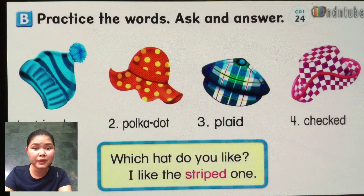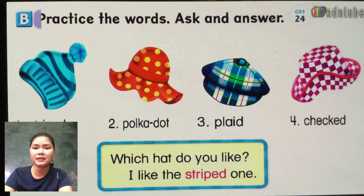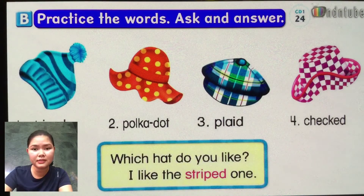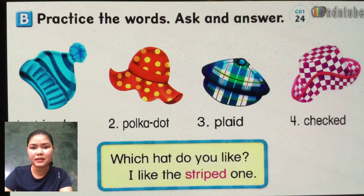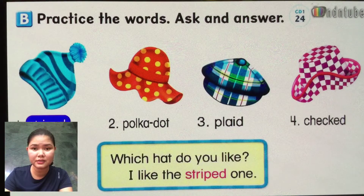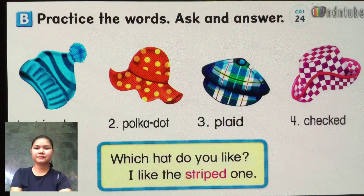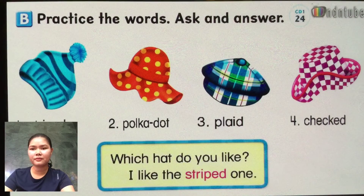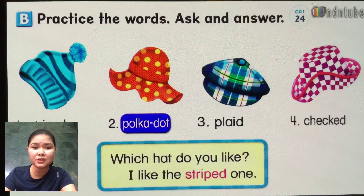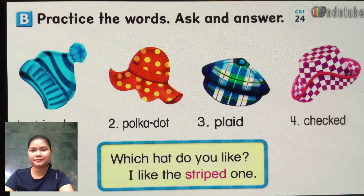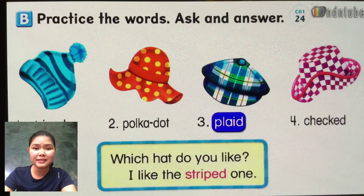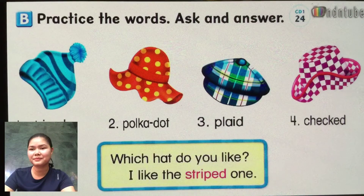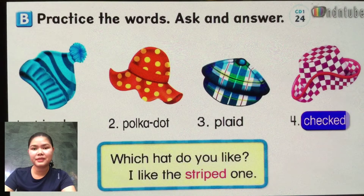Next, letter B, we'll practice the words and ask and answer. Okay, number one — say: Striped. Striped. Number two: Polkadot. Polkadot. Number three: Plaid. Plaid. Number four: Check. Check.